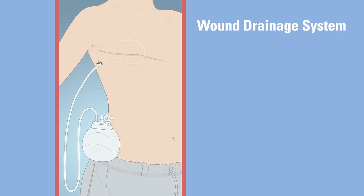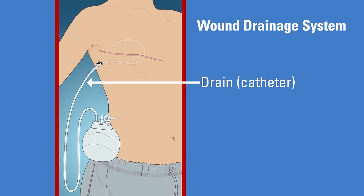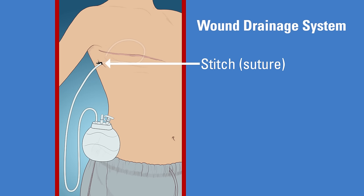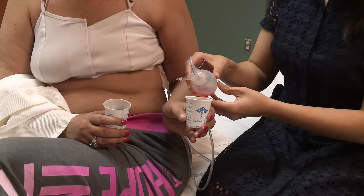Your wound drainage system consists of tubing, also called a catheter or drain, and a reservoir at the bottom of the tube, also called a bulb. The drain tubing is placed inside the wound by your surgeon and is secured to the skin outside of the wound with a suture or stitch. This area where the drain enters and is stitched to your skin is called the drain insertion site. The bulb provides gentle suction, which helps draw fluid from the wound site.